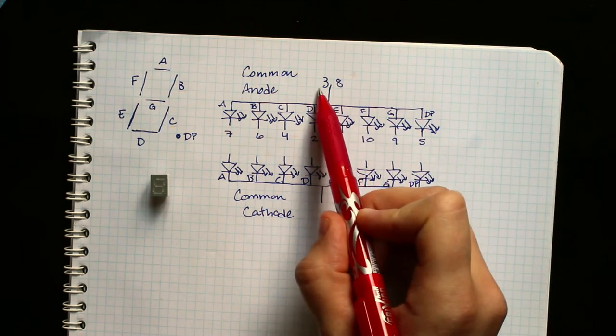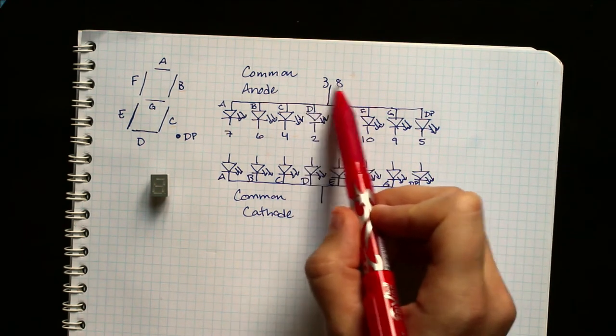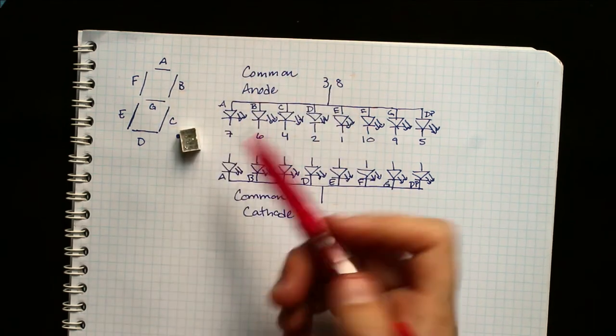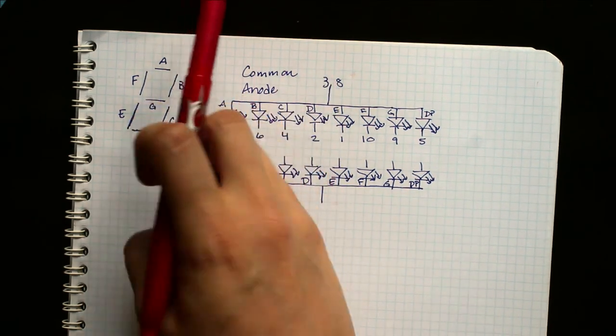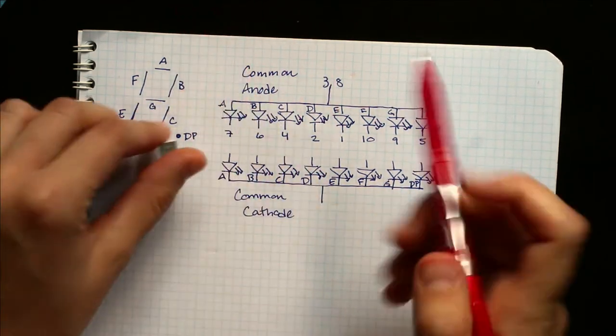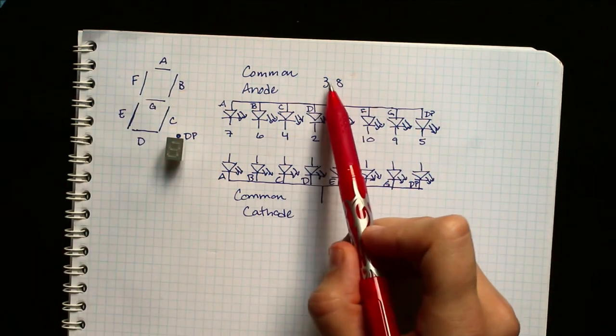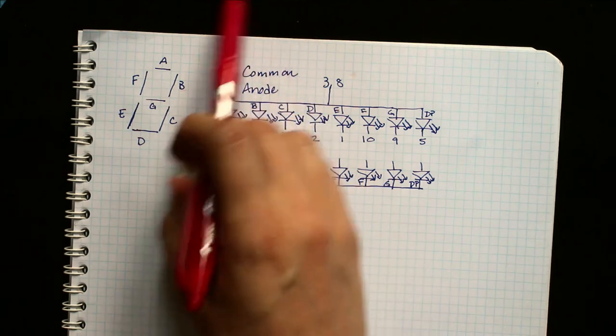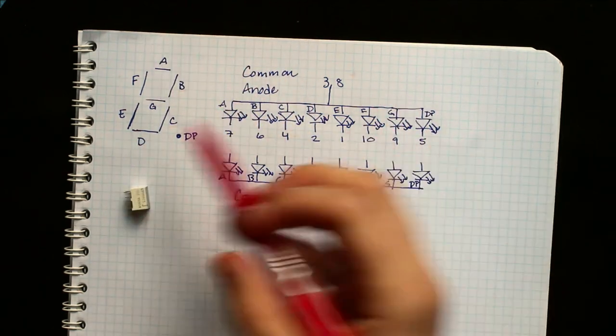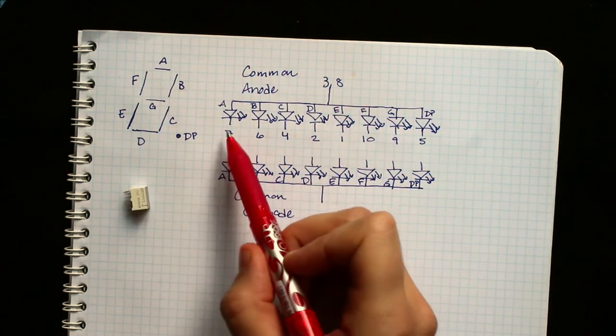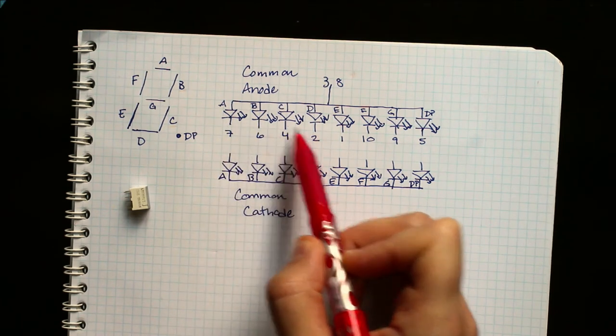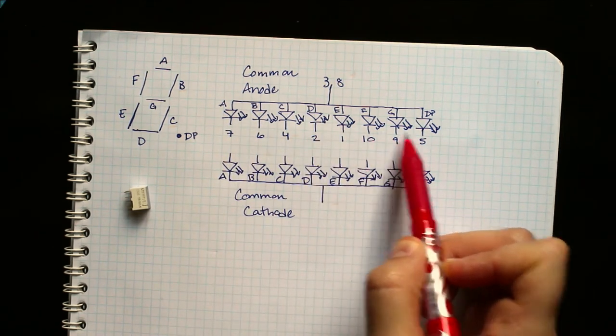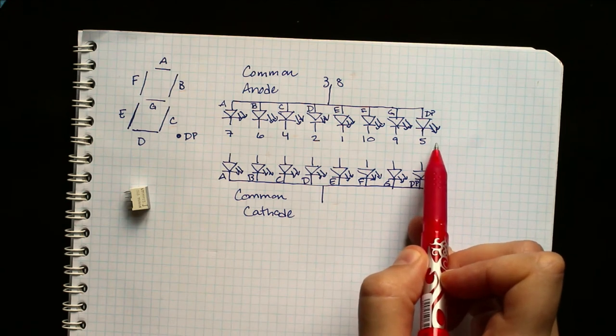So basically you have a pin, or in this case for this guy, because there's 10 pins, there's two pins that connect to the common pin that controls whether or not the LED display is on. And then each of these pins controls which segment will be lit up.